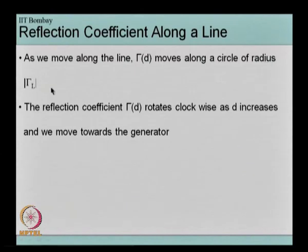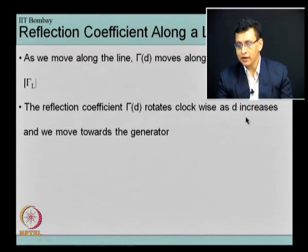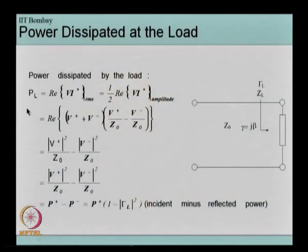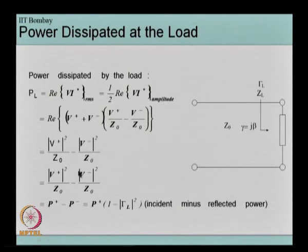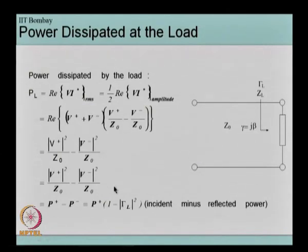As we move along the line, gamma(d) moves along a circle of radius |gamma_L|, and the reflection coefficient rotates clockwise as d increases towards the generator. For the power dissipated at the load: the total power transmitted to the load can be written as P+ times (1 − |gamma_L|²), where P+ is the power of the incident wave and gamma_L is the load reflection coefficient. If gamma_L is 0 then the power delivered to the load equals the incident power.